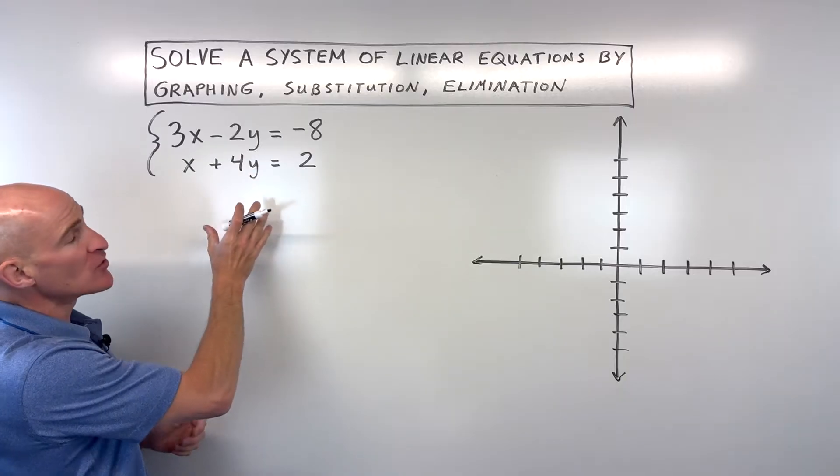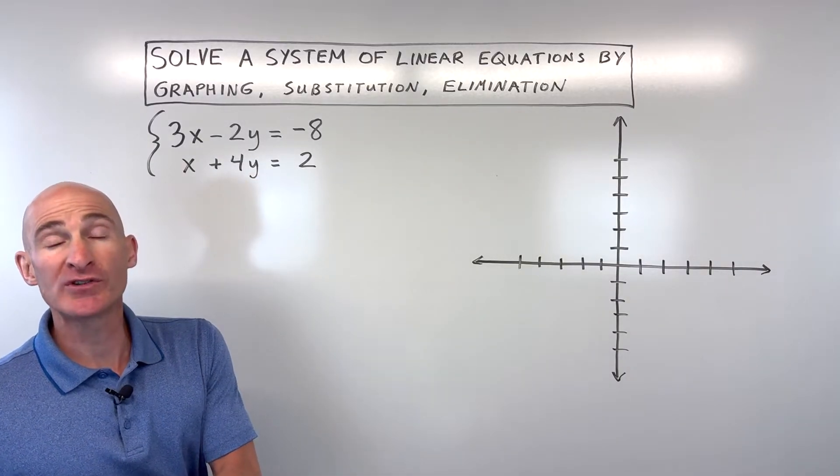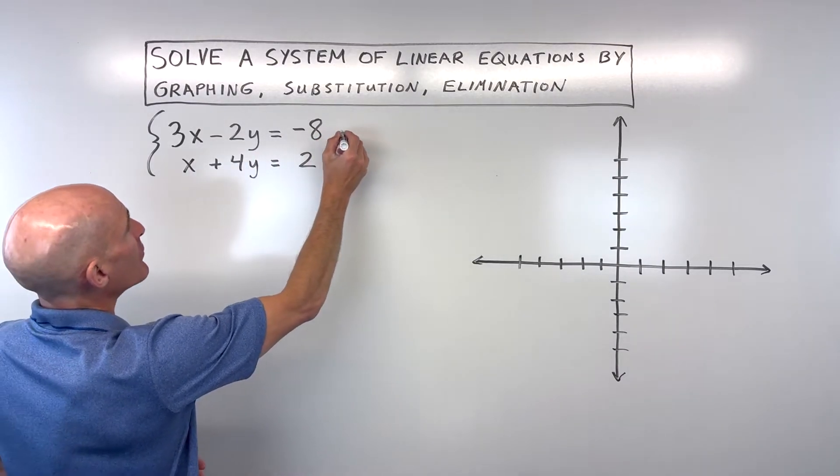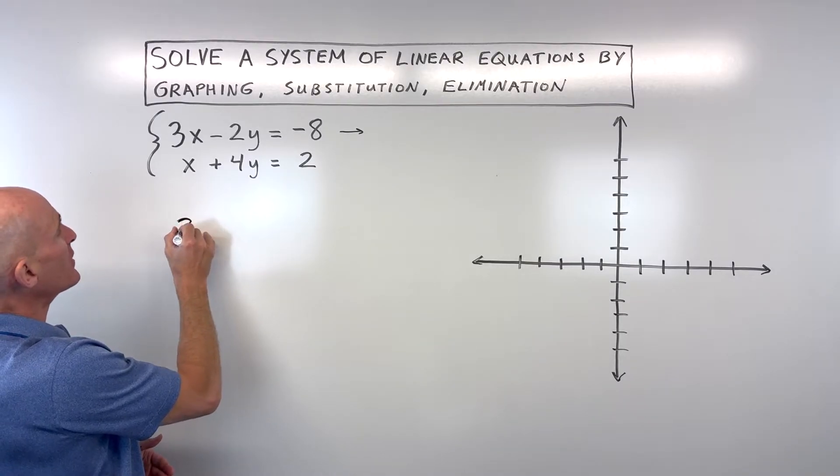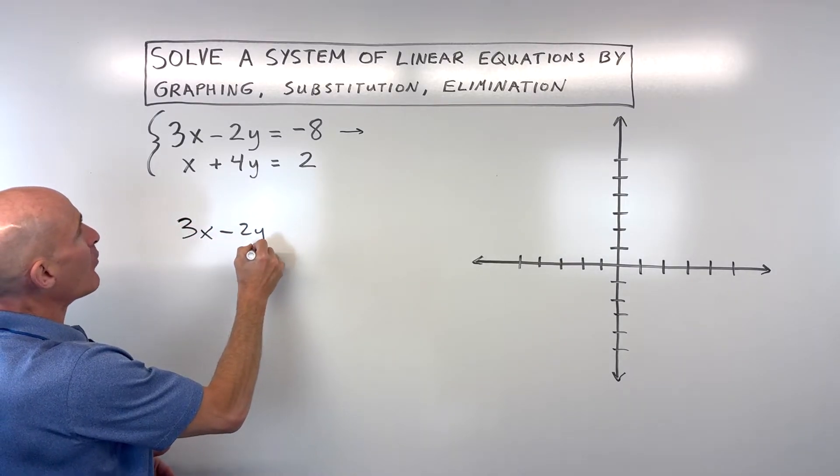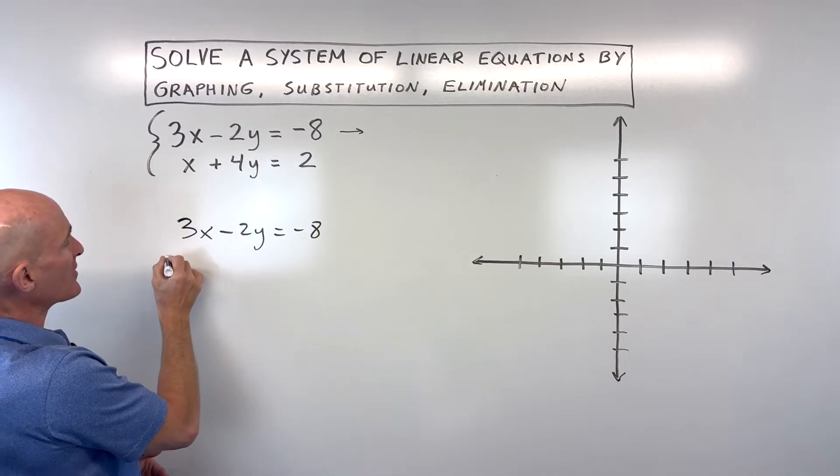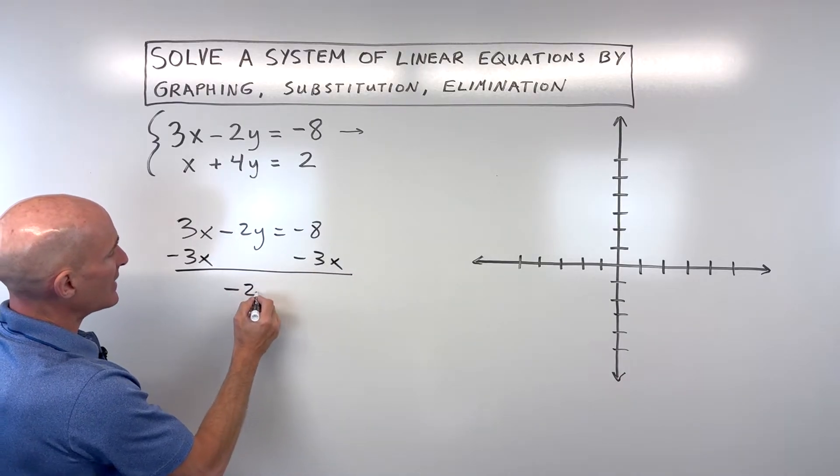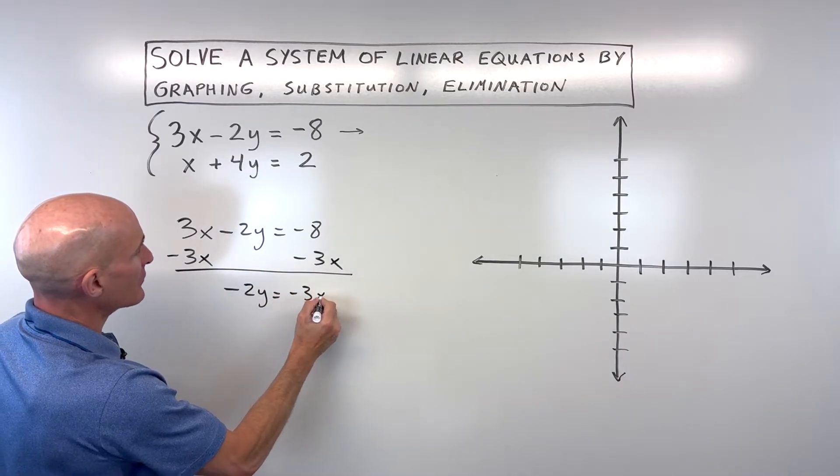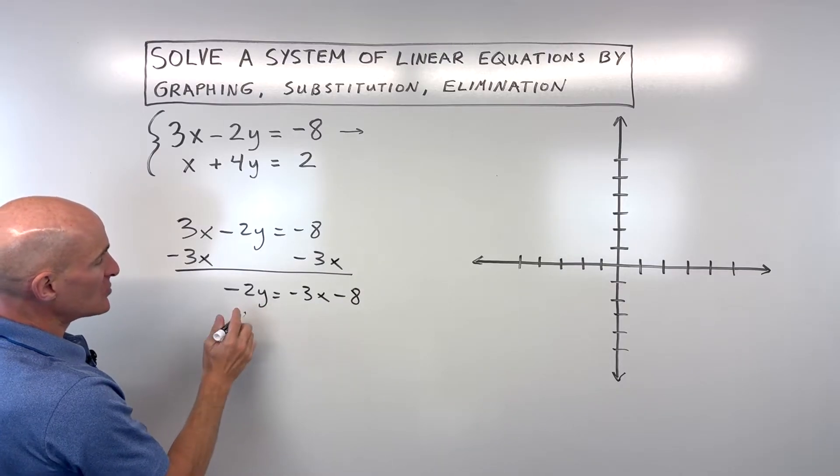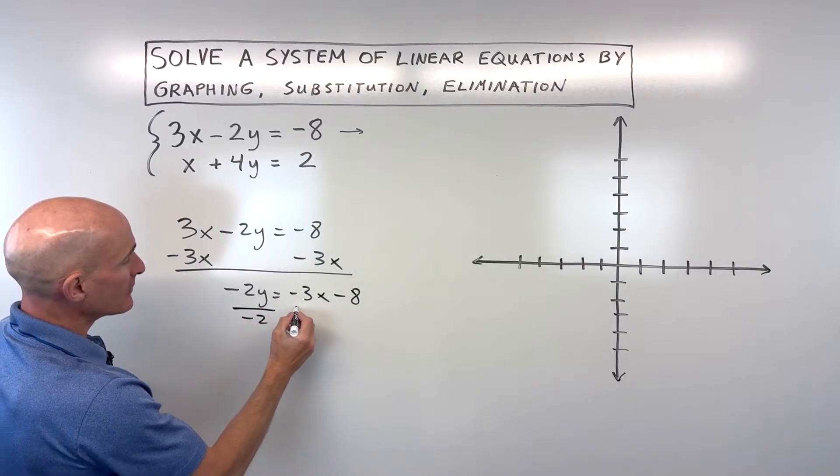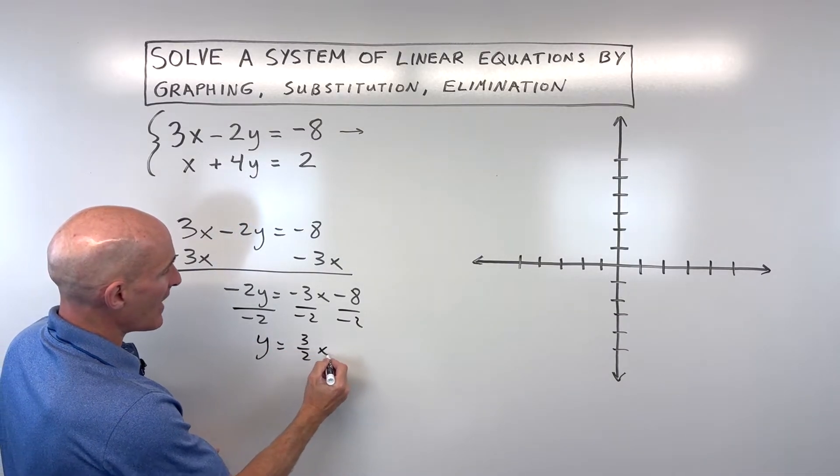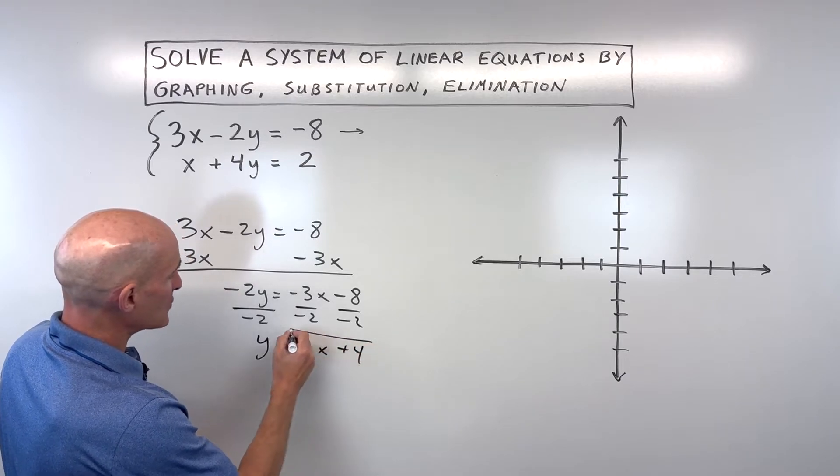One way that students like to do this is to rearrange the equations into the slope-intercept form, that's the y equals mx plus b form. So I'm going to do that with this top equation right here, and I'm just going to rewrite it a little bit here by getting that y by itself. And so I'm going to subtract 3x from both sides. So that gives us negative 2y equals negative 3x minus 8. I'm going to divide everything by negative 2 to get that 1y by itself, keeping the equation balanced. And so that gives us y equals 3 halves x plus 4. That's one of our equations.